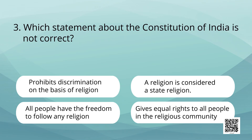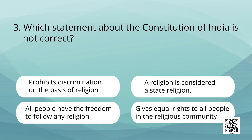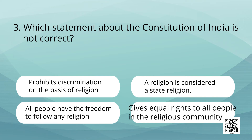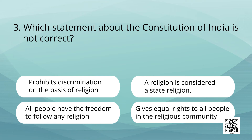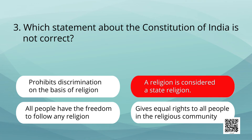Which statement about the constitution of India is not correct? Options: 1. Prohibits discrimination on the basis of religion. 2. A religion is considered a state religion. 3. All people have the freedom to follow any religion. 4. Gives equal rights to all people in the religious community. Answer: A religion is considered a state religion.